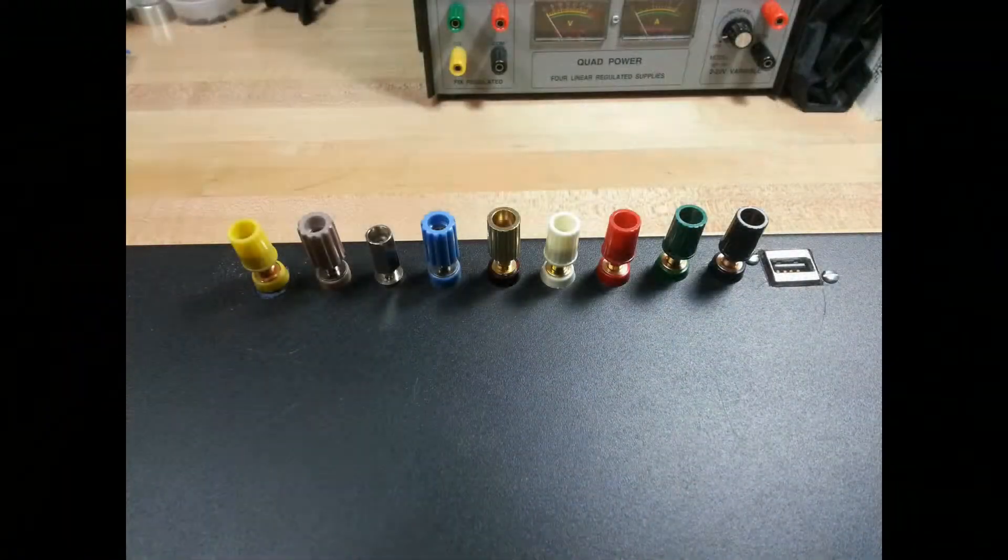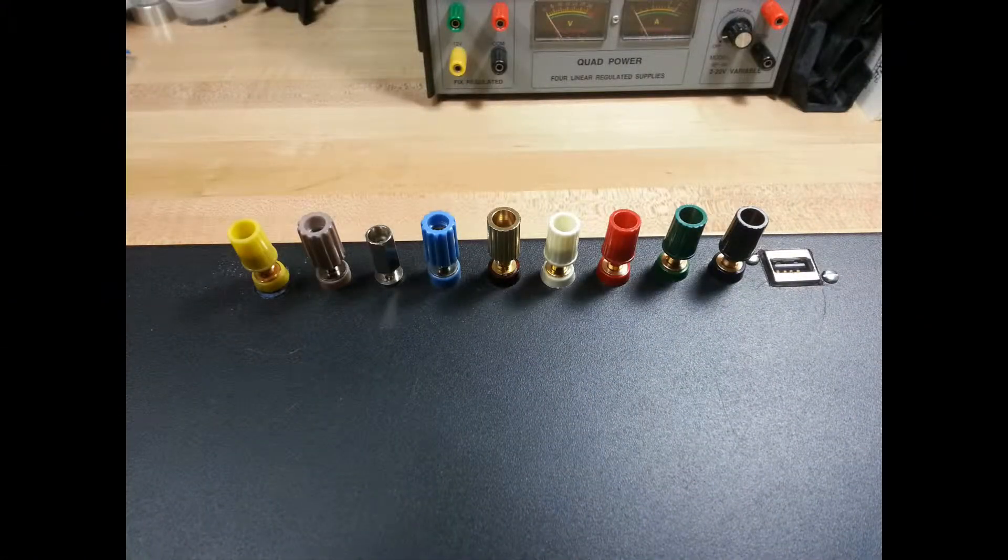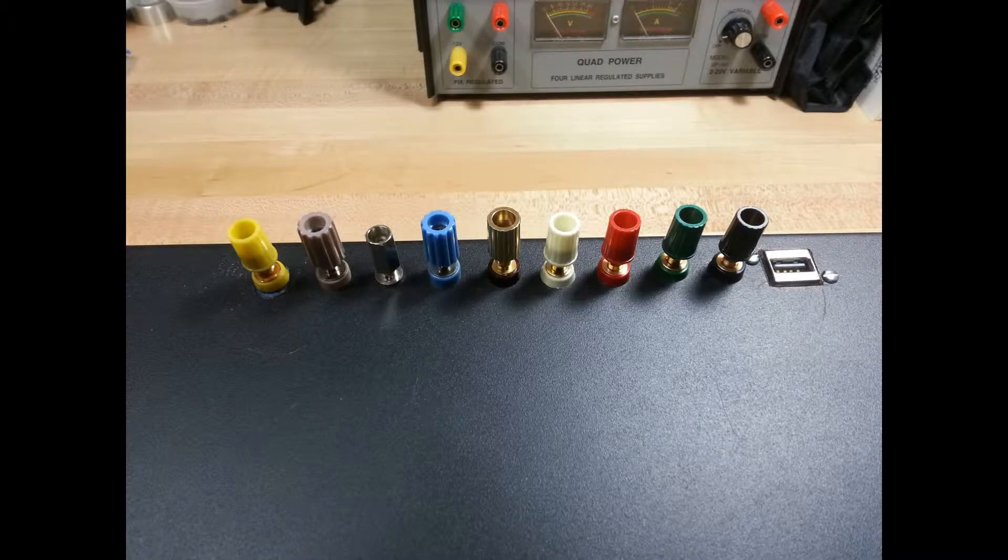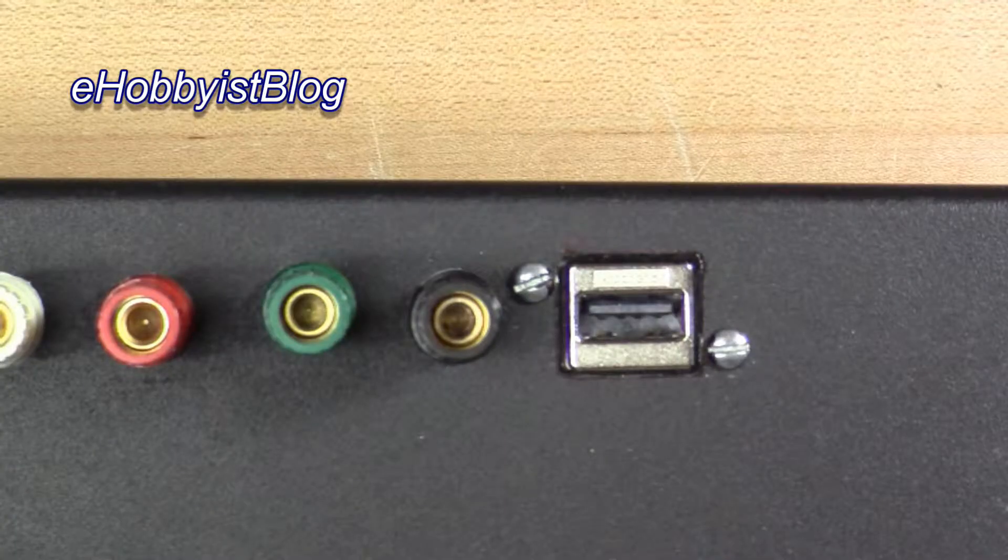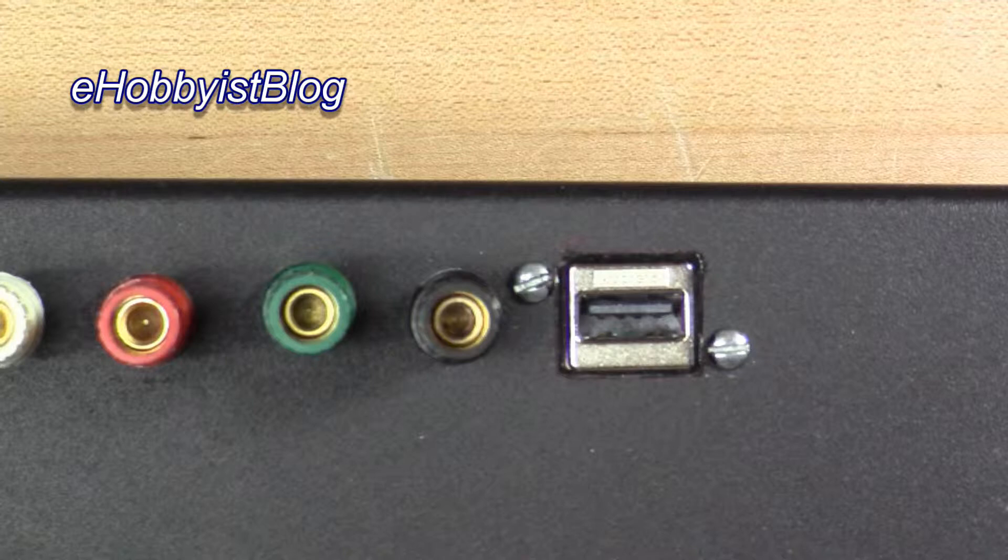And finally, the enclosure top panel with the USB port installed along with the binding posts. In this video, we center punched marks for the USB socket's mounting holes, then scribed the outline of the USB rectangular cutout. Drilled holes from the center punched marks and squared off the rectangular opening. Shorted the USB data pins and attached wire leads to the power pins. Then crimped and soldered ring terminals to the wires. And finally tested the USB pin continuity.